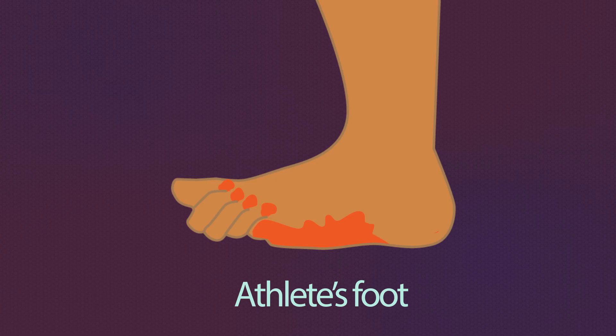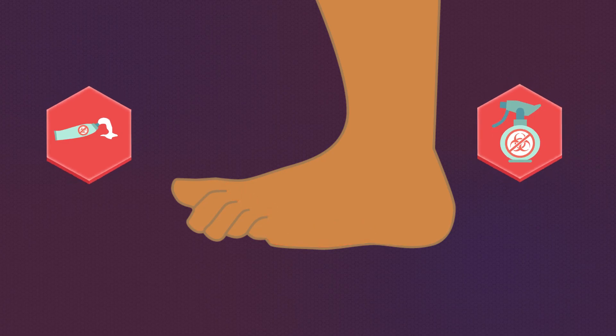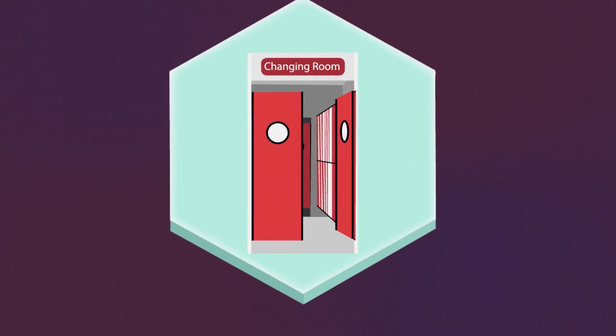Athlete's foot is not usually serious, but should be treated to stop it spreading to other parts of the body or to other people. It is treated by using creams or sprays that you can buy over the counter at the chemist. These contain fungicides that kill the fungi. Athlete's foot can easily spread to other people by touching the infected skin or coming into contact with contaminated surfaces or objects. Swimming pool changing rooms are a prime location.